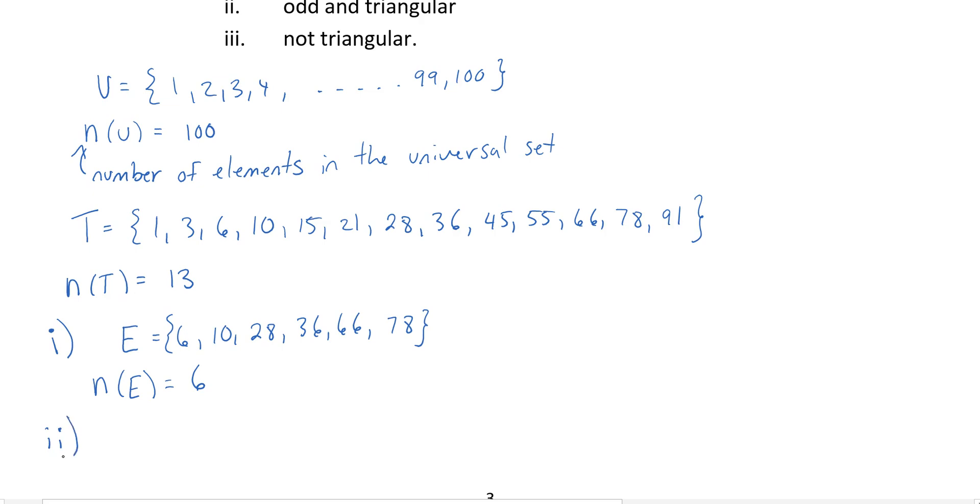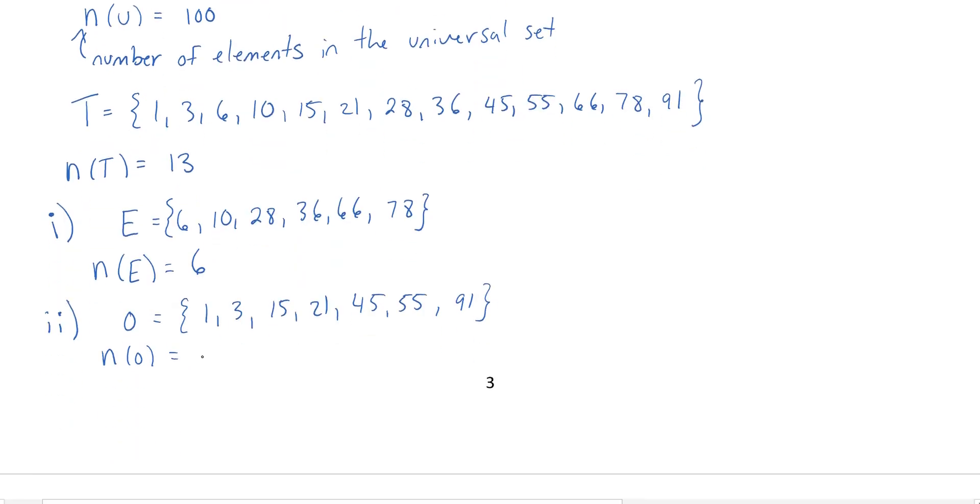And there's two ways of doing this last part. You can even look at the, either look at the total and subtract them, or count the odd ones as well. And the odd ones, we've got 1, 3, 15, 21, 45, 55, and 91. And the number of those would be 7. And that makes sense, because the total of even plus the total of odd should give you all of the triangular numbers.